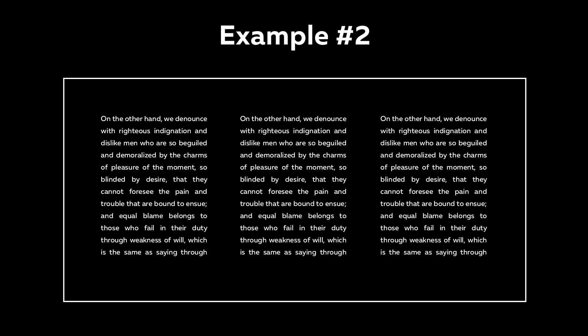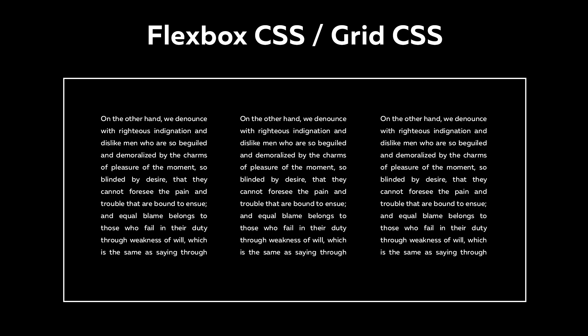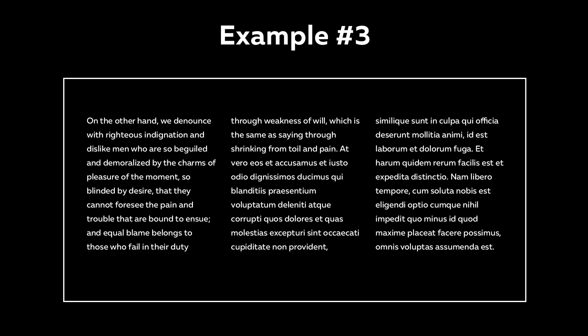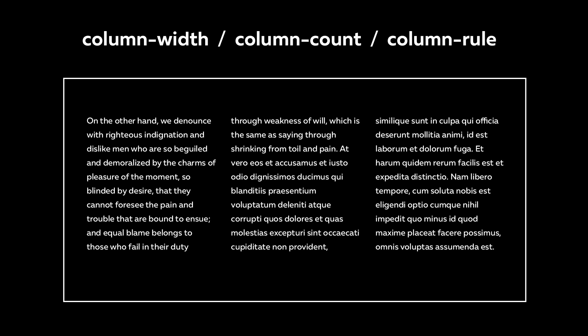Second task for you: how to arrange the text in three columns. Of course, here you can use Flexbox or Grid CSS. And the third task: how to set the text in three columns so that its content smoothly passes into a new column. Maybe you find it difficult to give an answer, but I will tell you how you can use several properties such as column-width, column-count, and column-rule.